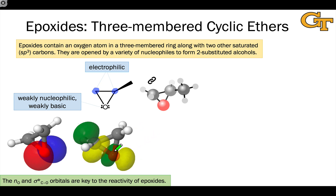You see a similar effect in cyclopropanes, where the epoxide oxygen is replaced with a saturated carbon. This is particularly true when the cyclopropane is polarized with electron-donating groups on one end and withdrawing groups on the other.